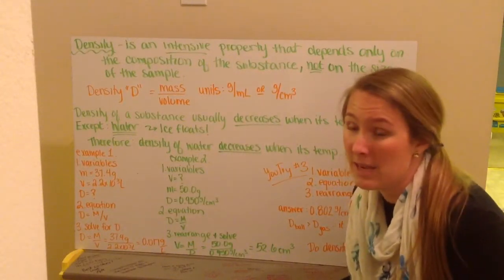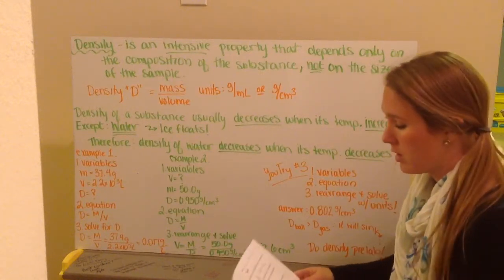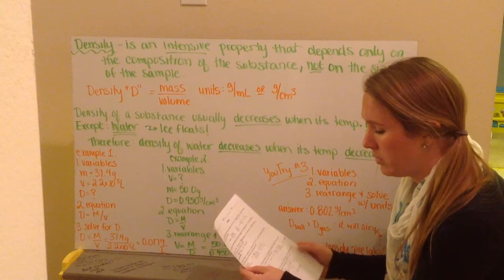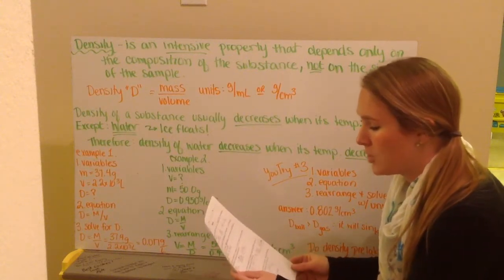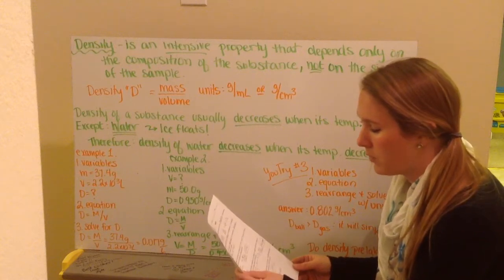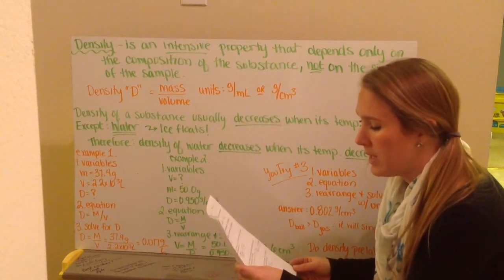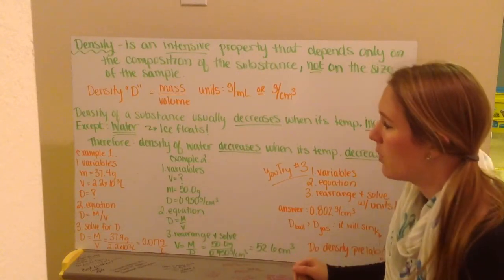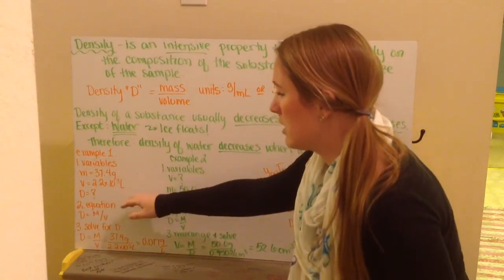So let's try a couple of example problems in your notes that you have. Example number one is a weather balloon is inflated to a volume of 2.2 times 10 to the third liters with 37.4 grams of helium. What is the density of helium in grams per liter?